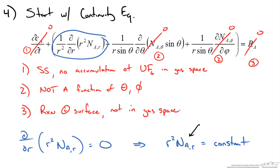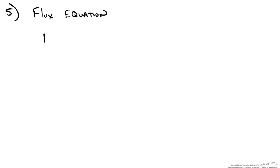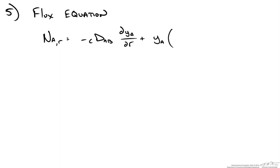We now need an expression for our flux. The flux of A in the radial direction can be written as: the total gas concentration times the diffusivity times the gradient of mole fraction in the radial direction — that is the diffusive flux part. Then we add the bulk flow component: the mole fraction of A times the sum of flux of A plus flux of B, where B is fluorine.